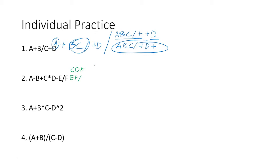Now let's handle everything else, starting from left to right. I'm skipping a lot of steps and not showing all my work — if you want to see all work shown, please refer back to the previous video. I'm assuming you've watched it and have some experience. So a minus b would become a b minus, then plus c d times, and we get a b minus plus c d multiply minus. A b minus is my first operand, c d multiply is my second operand.